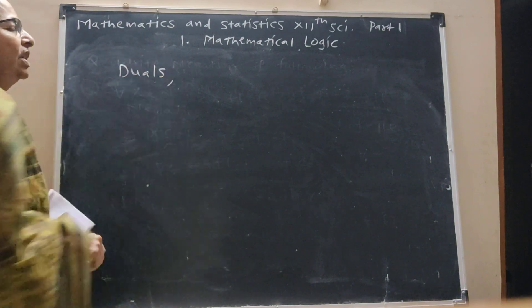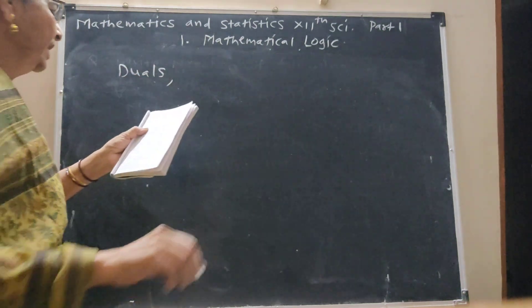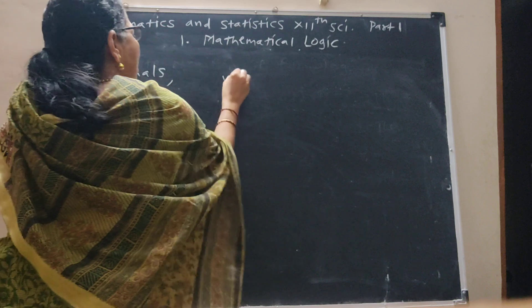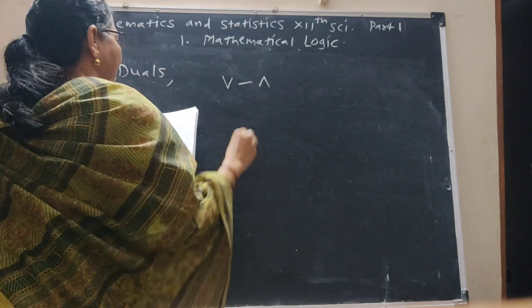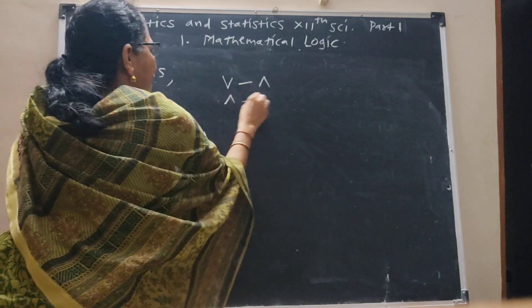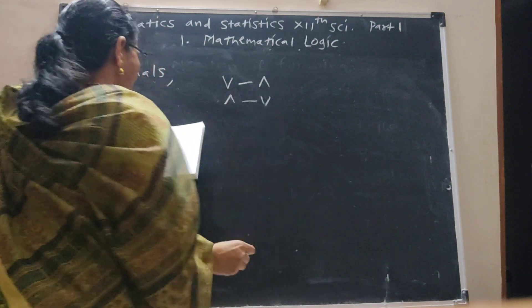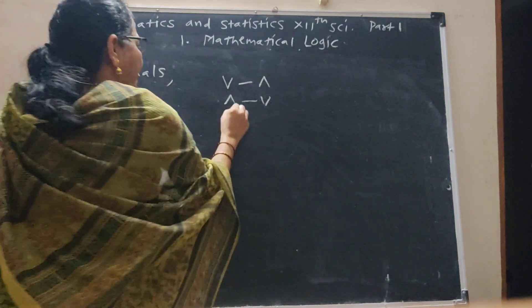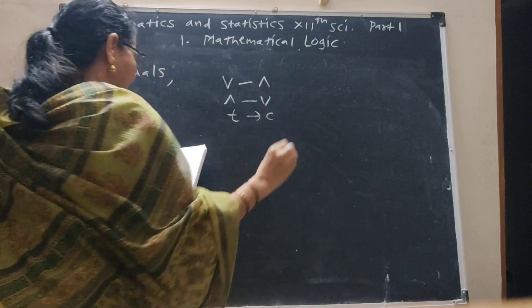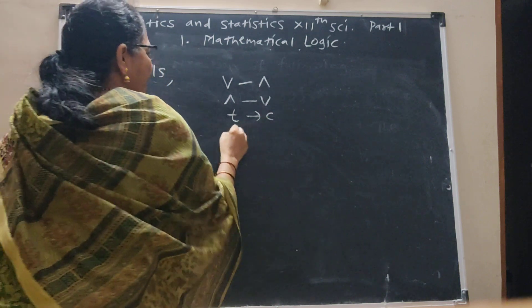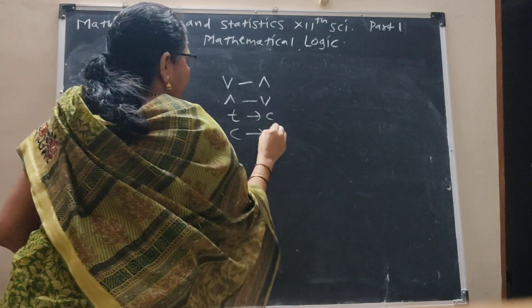In dual statements: if there is 'or', write 'and'; if there is 'and', write 'or'; if there is T (tautology), write C (contradiction); and if there is C, write T.